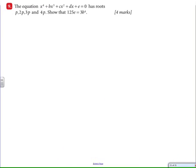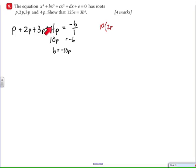Here we have a problem in red. It says the four roots are P, 2P, 3P, 4P. The first thing I notice is that's an arithmetic progression, because we keep adding P every time. When I do that, I collect all the like terms, I get 10P equals the opposite of B, and B equals negative 10P. What I'm trying to do is show 125E equals 3B⁴.